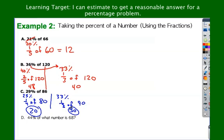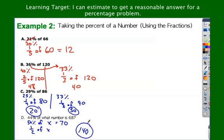Last one — this is the third type of percent problem, a little more difficult. 44% of what number equals 68? I'm going to round 44% to 50%. So, half of X equals 68 — I'll round 68 to 70. What number would I take half of to get 70? That's 70 times 2, so my answer is 140. This type of problem is a bit more difficult — we're going to spend more time focusing on these first two types of problems.